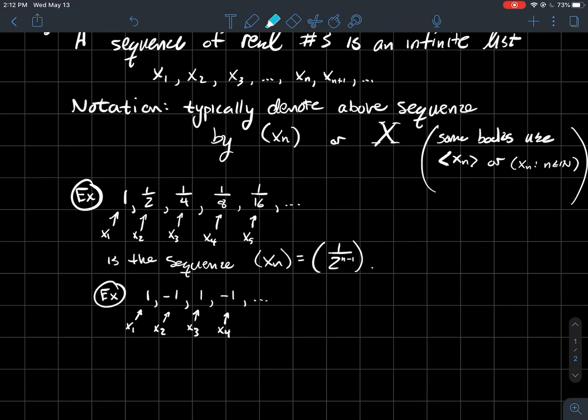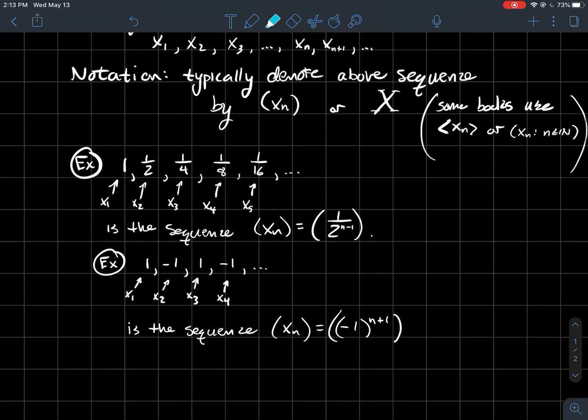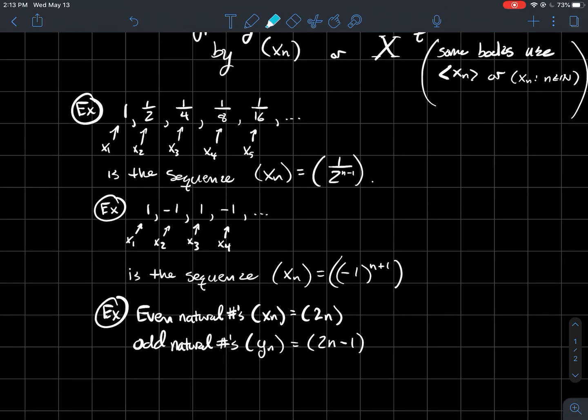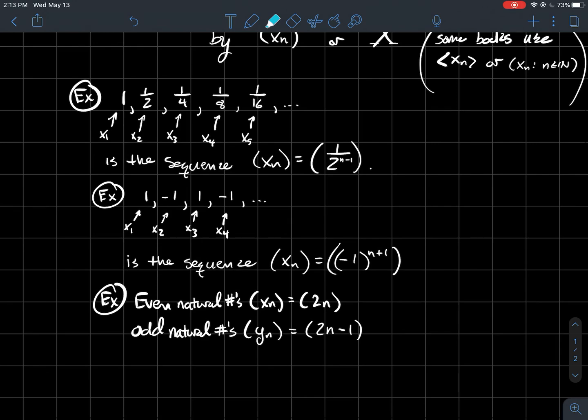And just to make sure you count it right, if you had minus one to the n, when n starts at one, minus one to the first would be minus one. That's not where my sequence starts at. So you just need to adjust that exponent a little bit. So I said n plus one, you could have also used n minus one. So lots of answers for what this exponent could be, but not just n. What else? How do you denote an even number or an even natural number? It's two times n. And the odds, we'll use two n minus one.